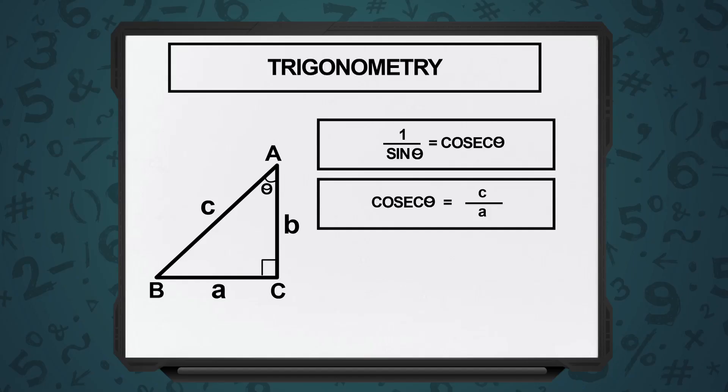There are three more ratios: 1 upon sin theta, the reciprocal of sin theta. Just remember one thing — you had sin, cosine, and their reciprocals: 1 upon sin and 1 upon cos will be cosec and sec. There is just a little trick over here.